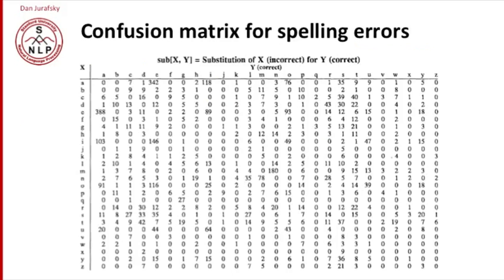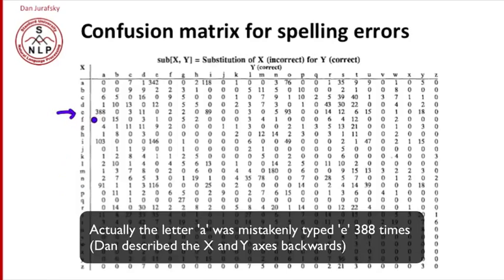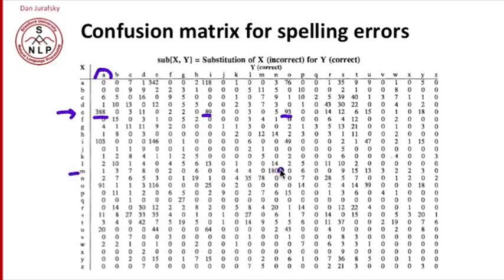Here's an example of a confusion matrix for spelling errors. This is a substitution matrix that I took from Kernighan et al. Here's the letter E and it's very likely in their data, 388 times, to be substituted with an A. So you meant to type E, you incorrectly typed an A. Or you might have typed an I or an O. Vowels are very likely to be mistaken for each other. Similarly, the letter M very often gets mistyped as an N. M and N are next to each other on the keyboard, they sound alike.